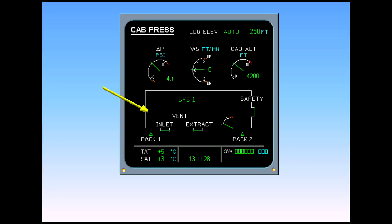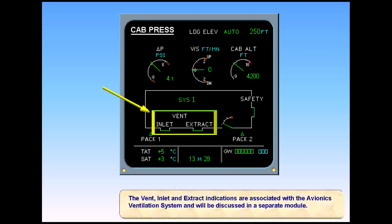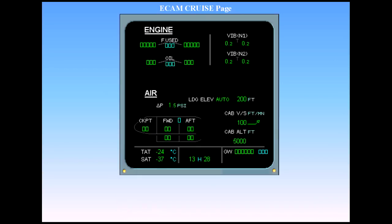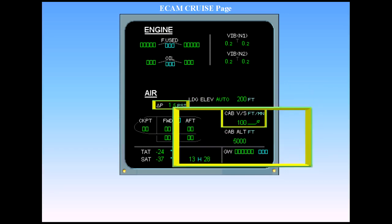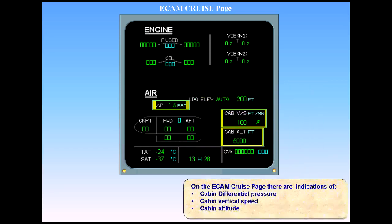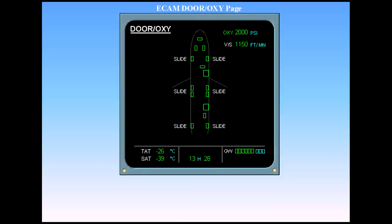The vent, inlet, and extract indications are associated with the avionics ventilation system and will be discussed in a separate module. On the ECAM cruise page, there are indications of cabin differential pressure, cabin vertical speed, and cabin altitude. There is also an indication of cabin vertical speed on the ECAM door page. Note that this indication is only displayed when the aircraft is airborne.